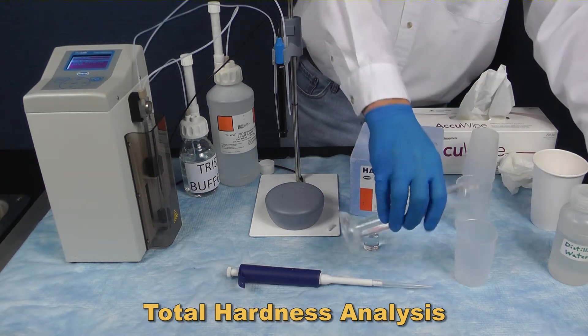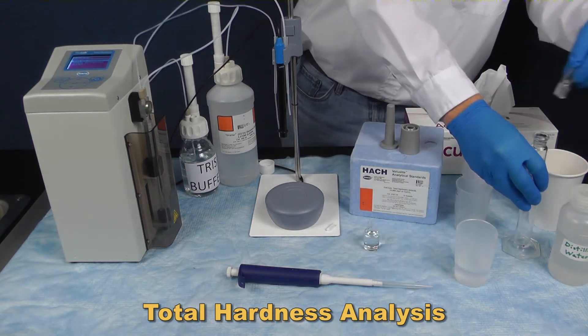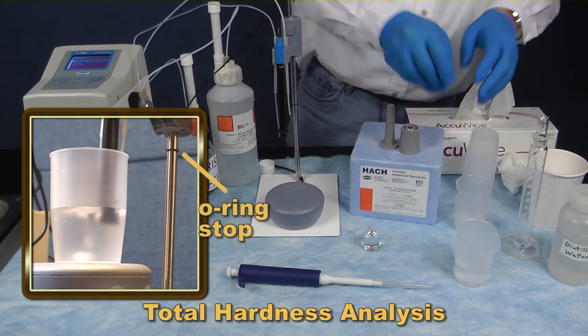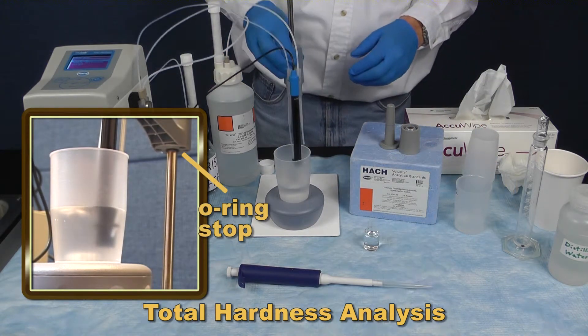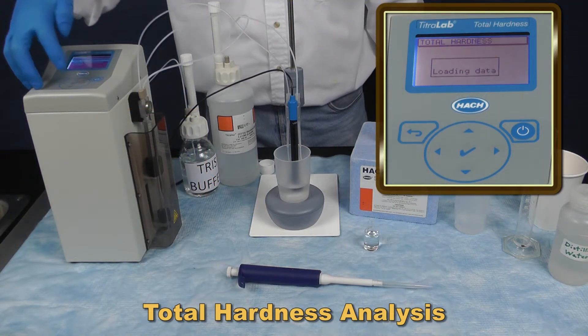Place a stir bar into the standard. Place the sample onto the stir stand and lower the electrode into the solution. On the screen, select Analyze Hardness, Start Analysis.